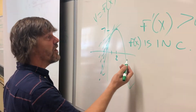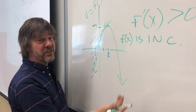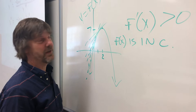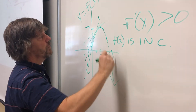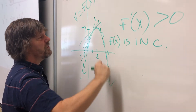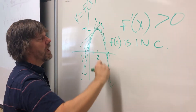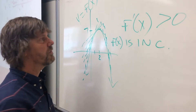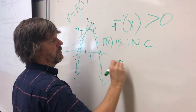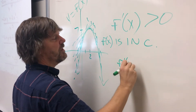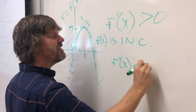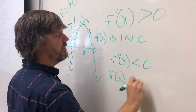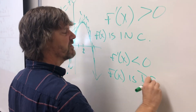Now, if the function is decreasing, what do you think is going to happen? Well, look at all your tangent lines — all the slopes of those lines are going to be negative numbers. Therefore, if the derivative is less than zero, your function is decreasing.